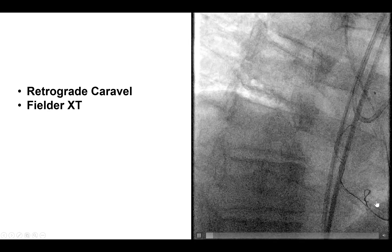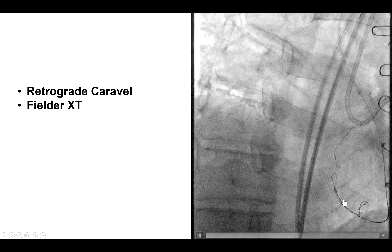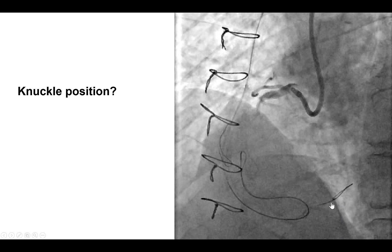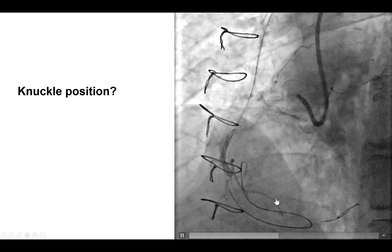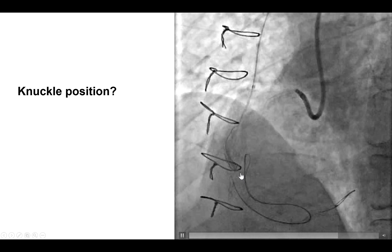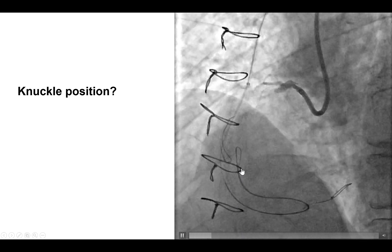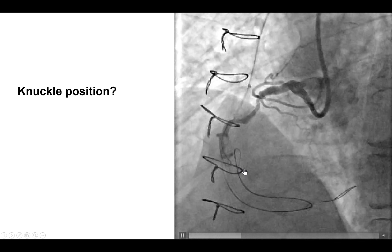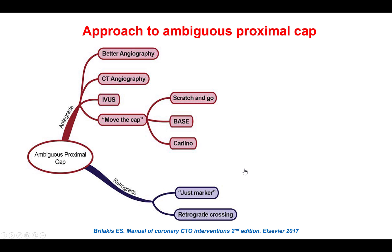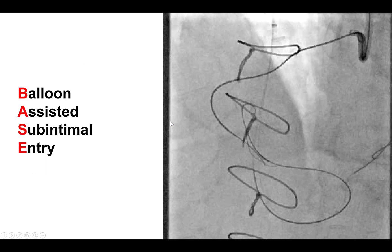We persisted. We advanced a retrograde Corsair microcatheter and used a Fiedler XT to create a knuckle. Things were going okay, but then we noticed that the knuckle was actually veering off what we thought was the course of the vessel. Therefore, we decided to try antegrade again. Retrograde had not worked here and we did not have any of the other options.